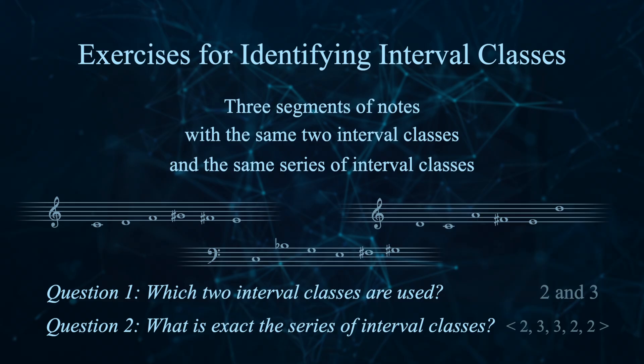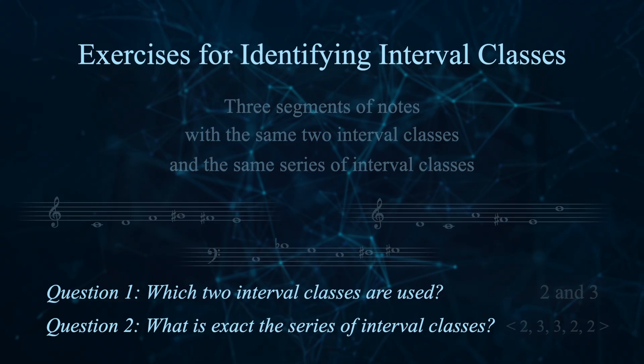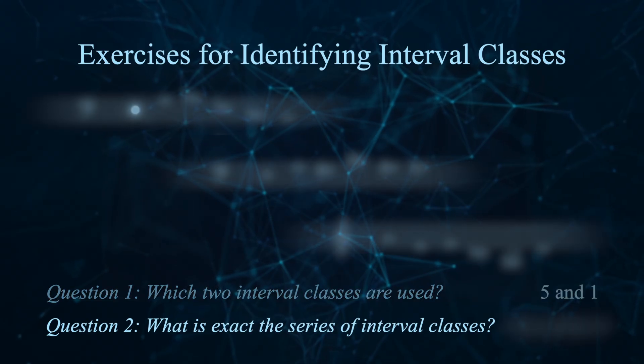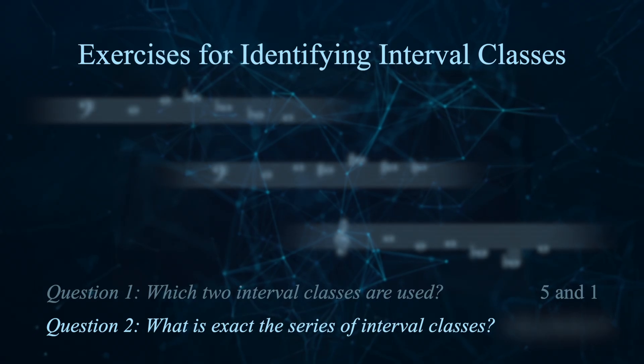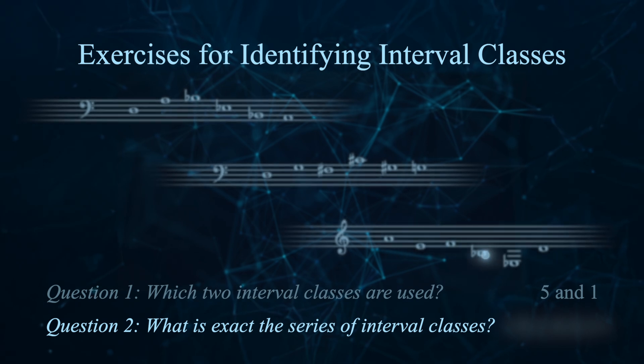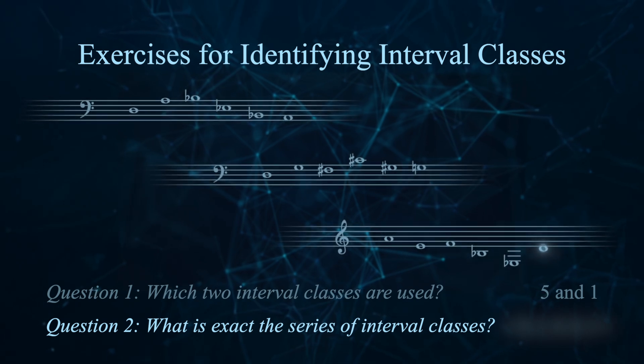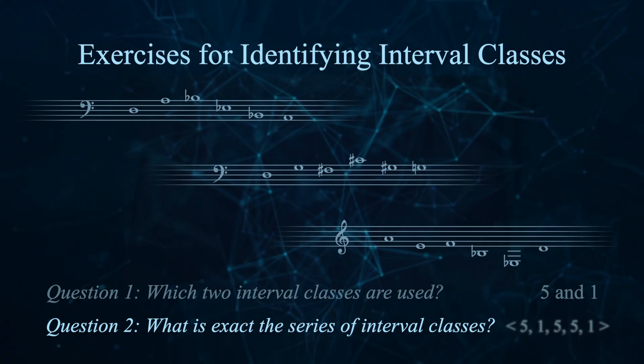Let's hear an example which uses the interval classes 5 and 1. For this one, the specific sequence was 5, 1, 5, 5, 1 each time.